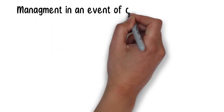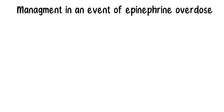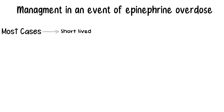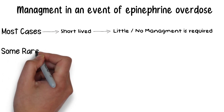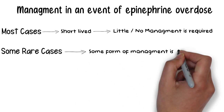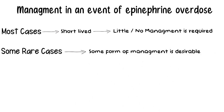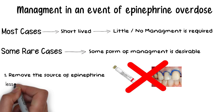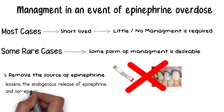If an epinephrine overdose has occurred, most cases are so short-lived that little or no management is necessary. However, on some rare occasions the reaction may be prolonged and some management is desirable. The first thing to do is to remove the source of epinephrine — the injection or gingival retraction cord should be removed, and no further injection should be administered. Stopping the injection does not remove already deposited epinephrine, but release of endogenous epinephrine and norepinephrine from the adrenal medulla and nerve endings is lessened once the anxiety-inducing stimulus is eliminated.